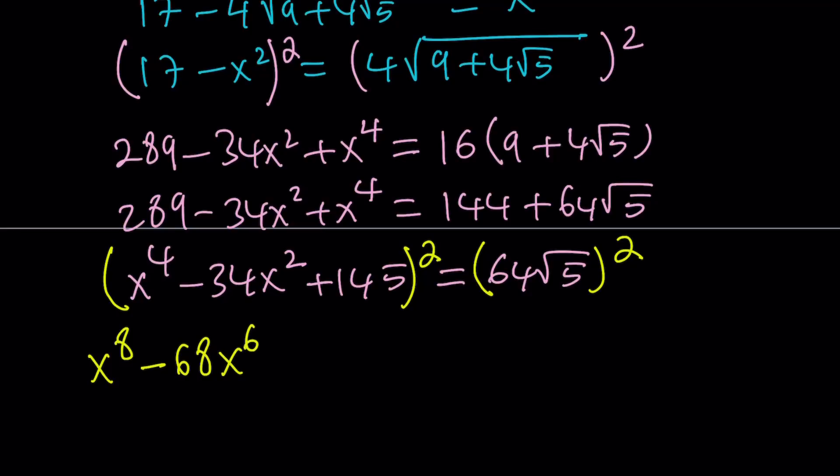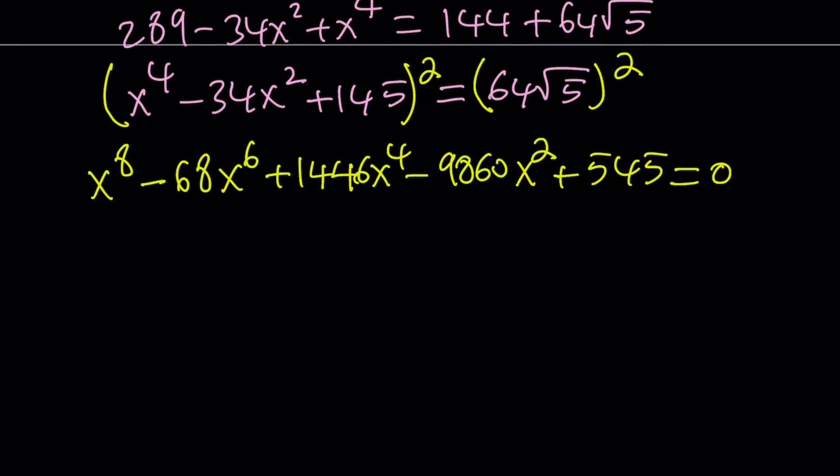This is what we get: x to the eighth power minus 68x to the sixth power plus 1,446x to the fourth power minus 9,860x squared plus 5,465 equals 0. This is your octic, and good luck solving the octic. There's no octic formula, obviously. Starting with the quintic, we have no general formulas.